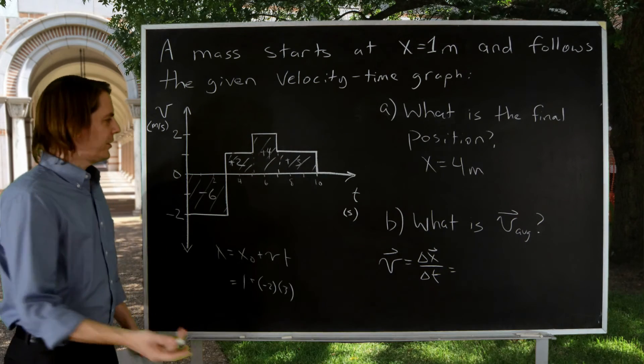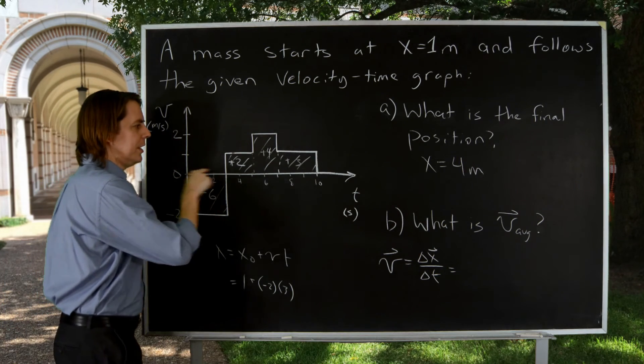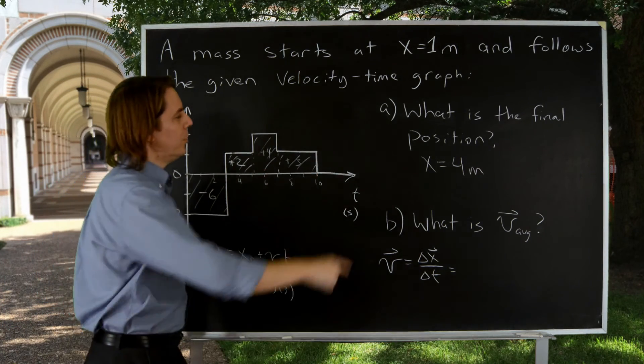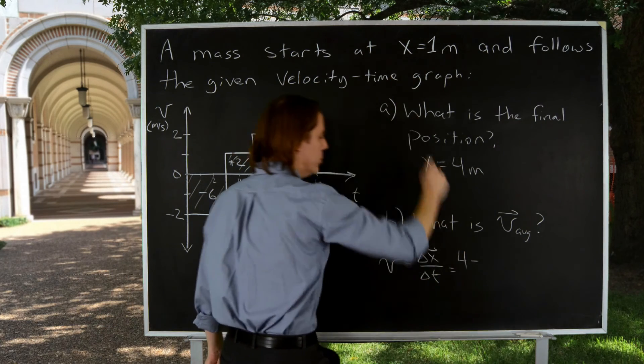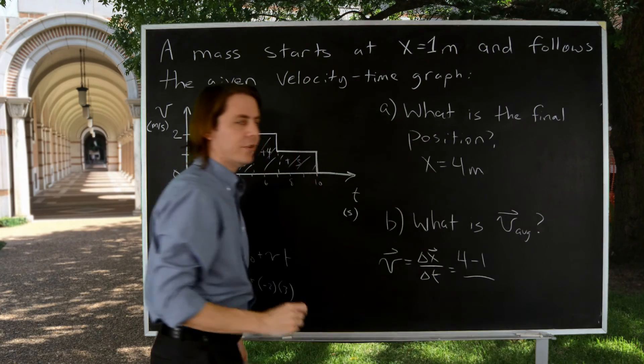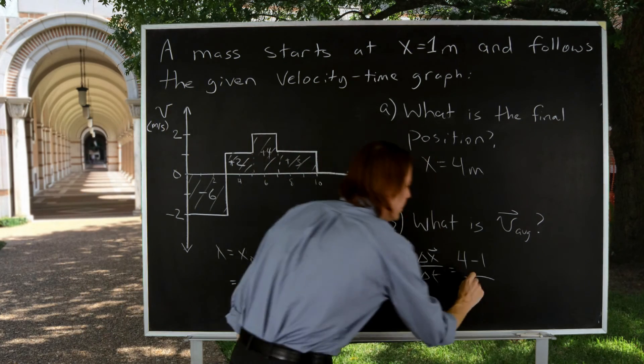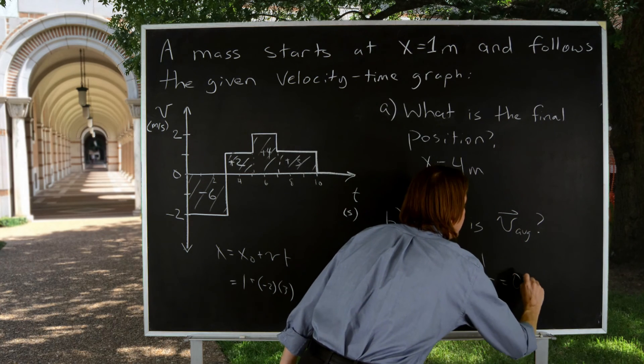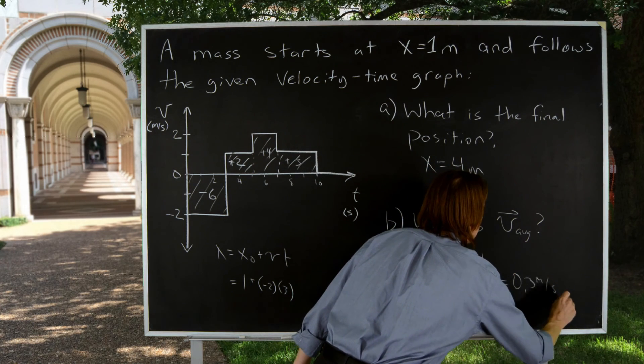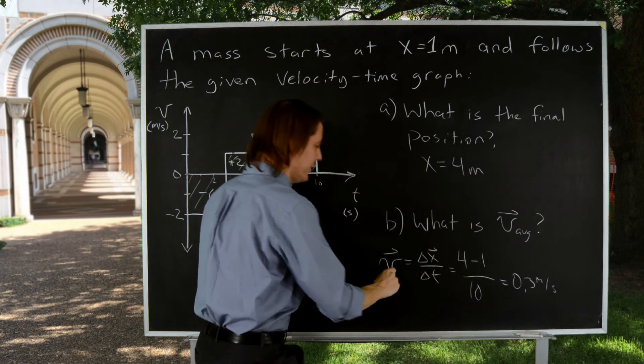Well, the displacement is final minus initial. We really just care about zero and 10 seconds. So the final was four meters. The initial was one. And delta t is 10 seconds. So that's three over 10. That's 0.3 meters per second.